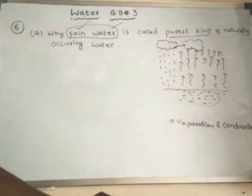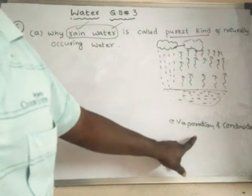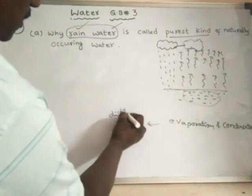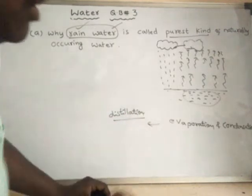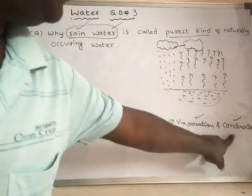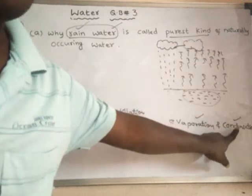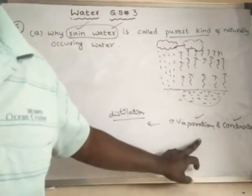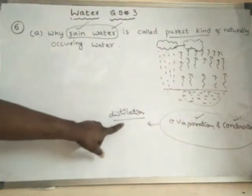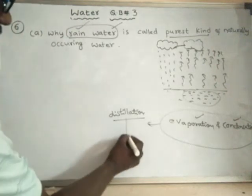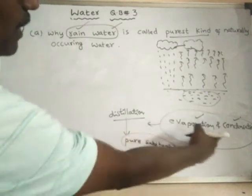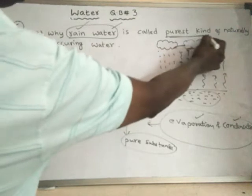During this process, first evaporation of water takes place, then after evaporation, the vapor is condensed into cloud or rain. The process where evaporation is followed by condensation is called distillation. Distillation is the process of evaporation and condensation together. Any substance formed by distillation is said to be a pure substance, and rain water is formed by this method.